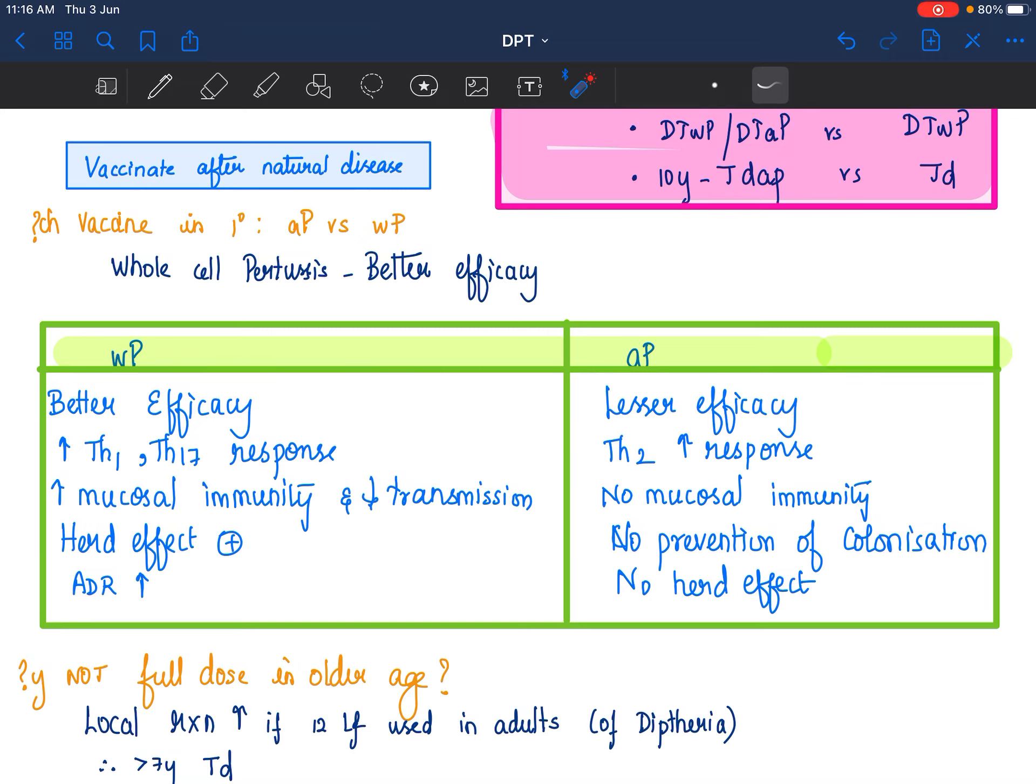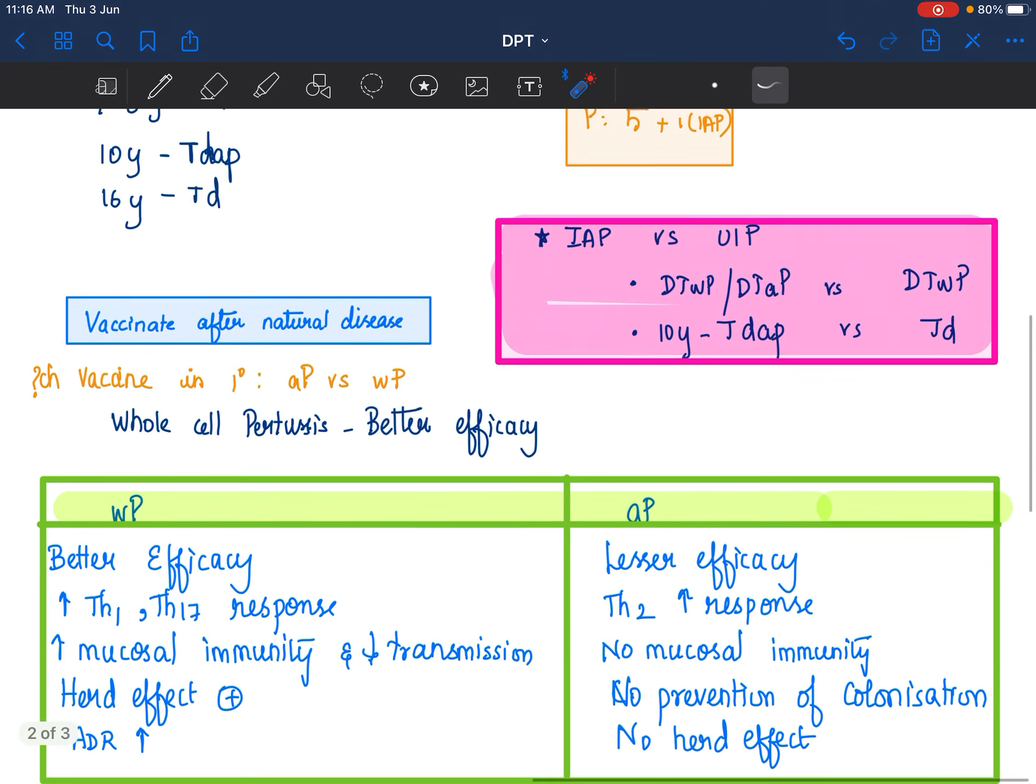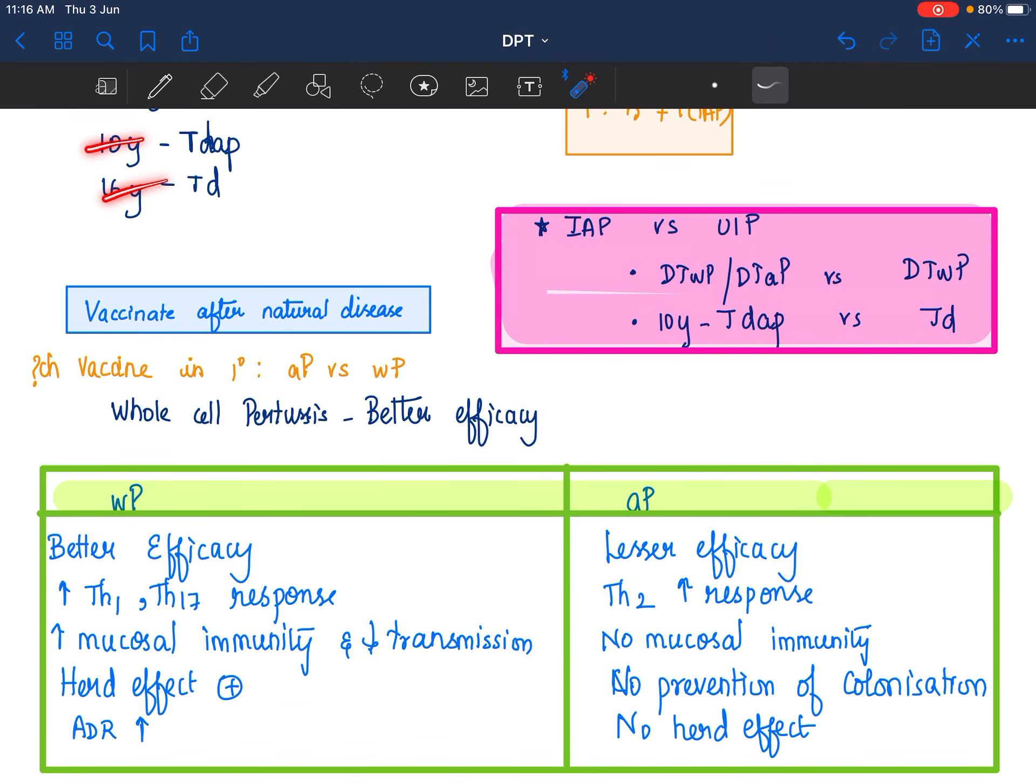There is no herd effect with acellular pertussis. And another question that can be, that should come into your mind is, why can't we give DPT at 10 years and 16 years?